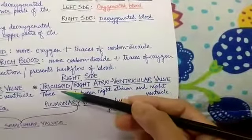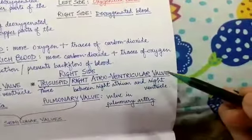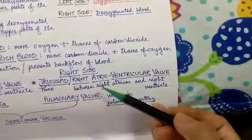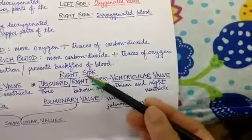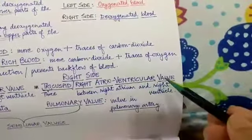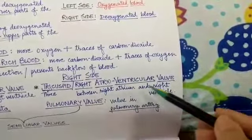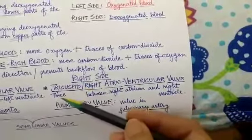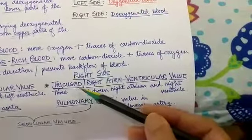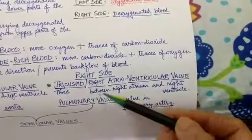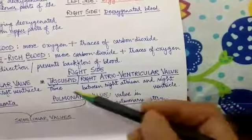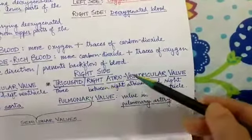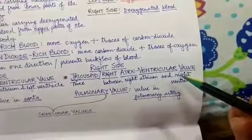Moving on to the right side, it is the tricuspid or right atrioventricular valve. Right means it's present on the right side, and atrioventricular means it's present between the right atrium and right ventricle. It is called tricuspid because it has three cusp or leaf-like structures. Hence, the valve present between the right atrium and right ventricle with three cusp-like structures is known as the tricuspid or right atrioventricular valve.